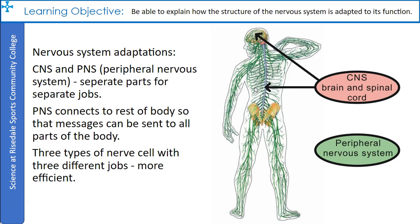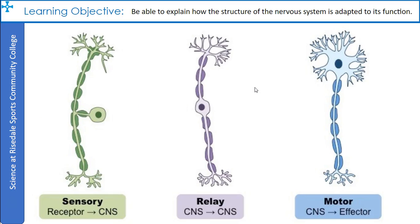The peripheral nervous system connects to all parts of the body so that messages can be sent anywhere they need to be. There are three different types of nerve cells with three different jobs — this makes the system more efficient. The sensory nerve cell gathers information from the senses, the relay nerves in the central nervous system pass the message on, and the motor neurons go back to the effectors and cause some sort of reaction to happen.